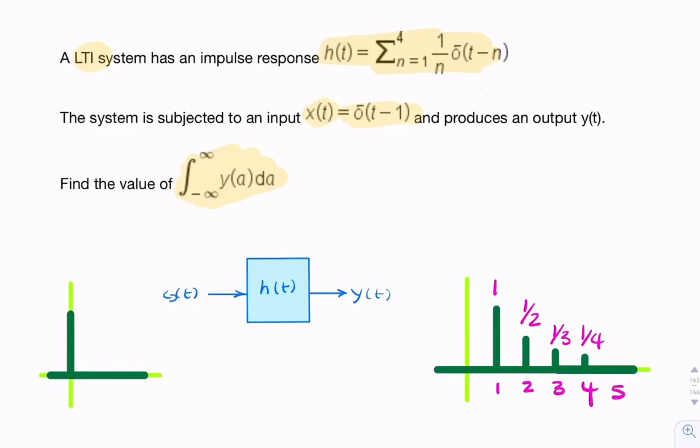So that's our impulse response. This is what the output would look like if the input was an impulse at t equals 0. If x(t) happened to be an impulse, then the output would look like that.